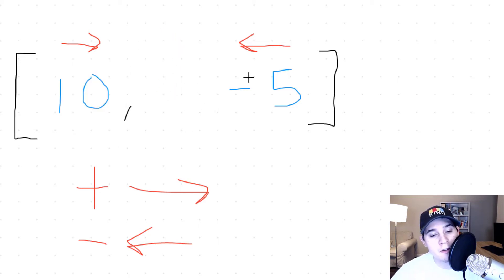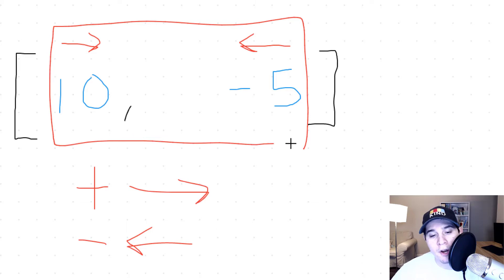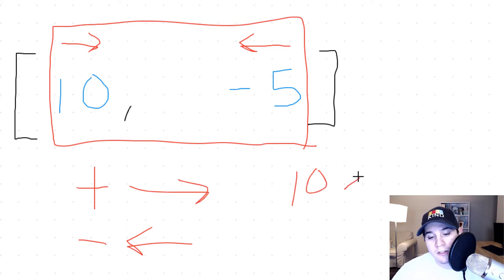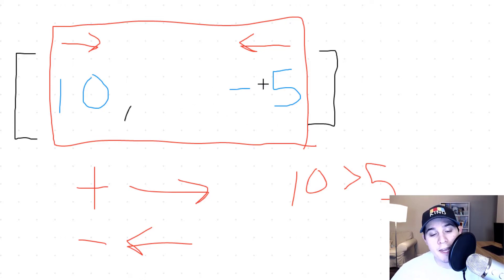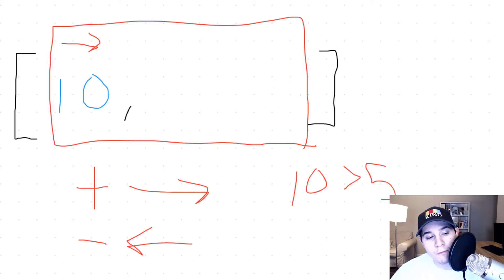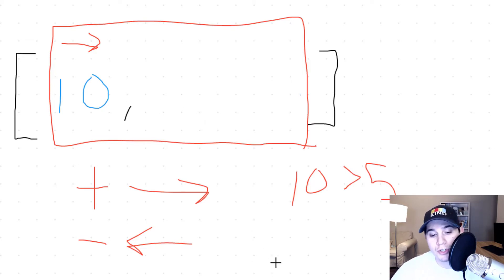But keep in mind, this negative 5 is still moving to the left. So now we need to compare the 10 and the negative 5. Obviously 10 is greater than 5, so the negative 5 is going to be removed. By the end of both of those collisions, we are only left with the number 10. So our result should just return the array [10].